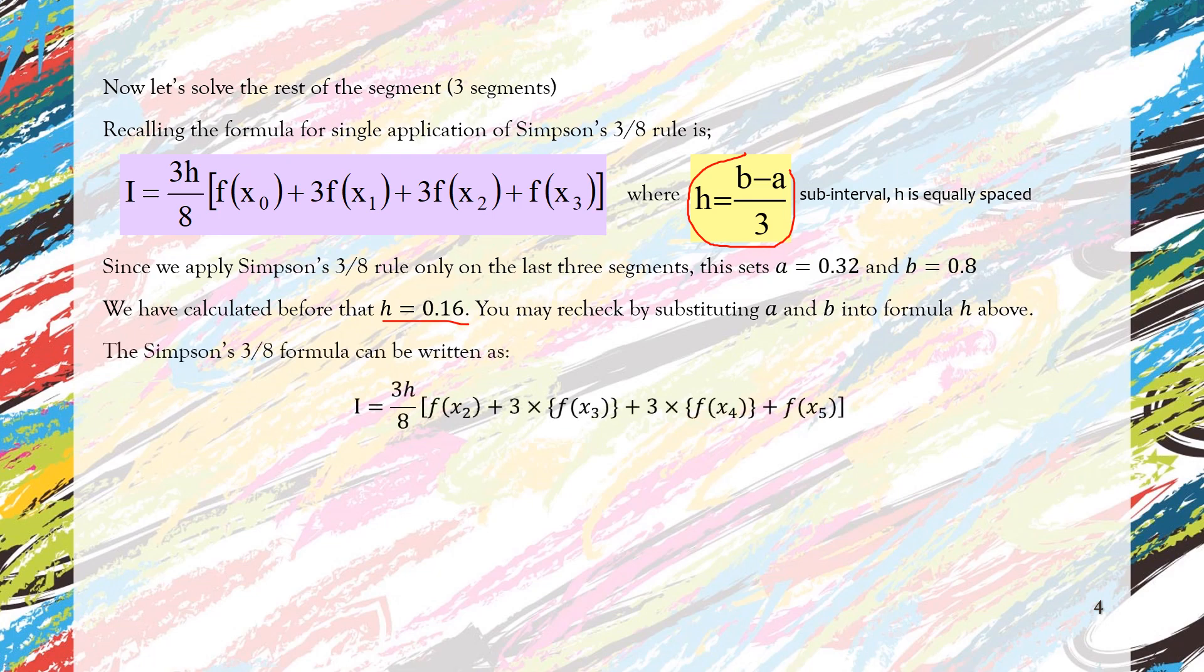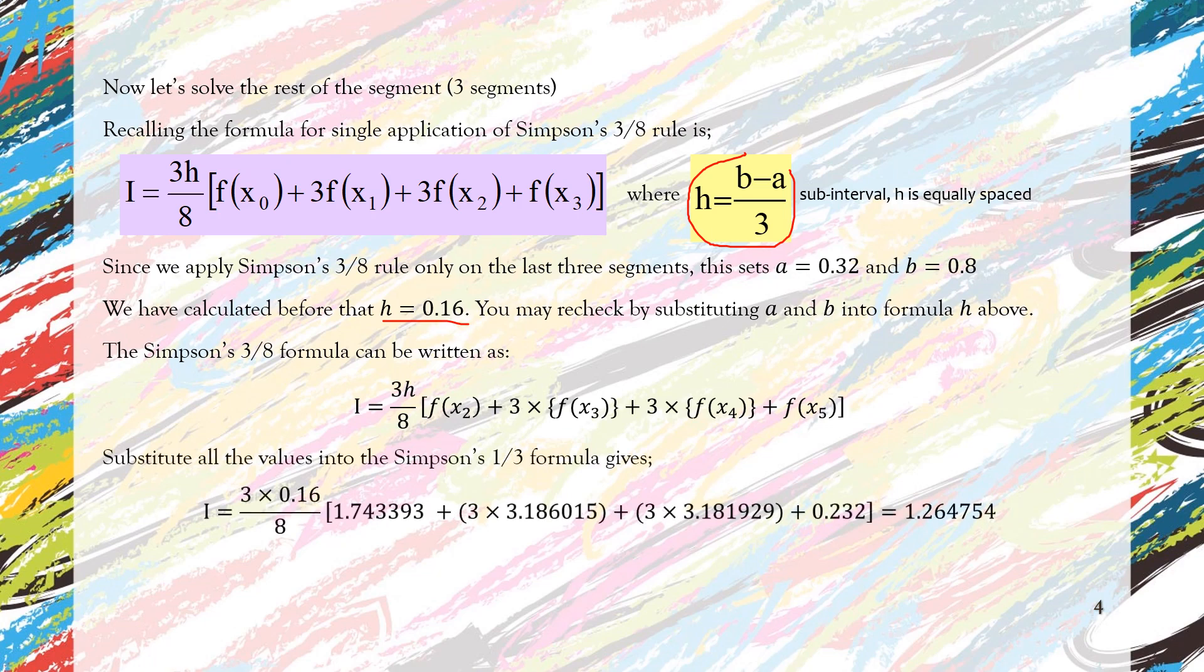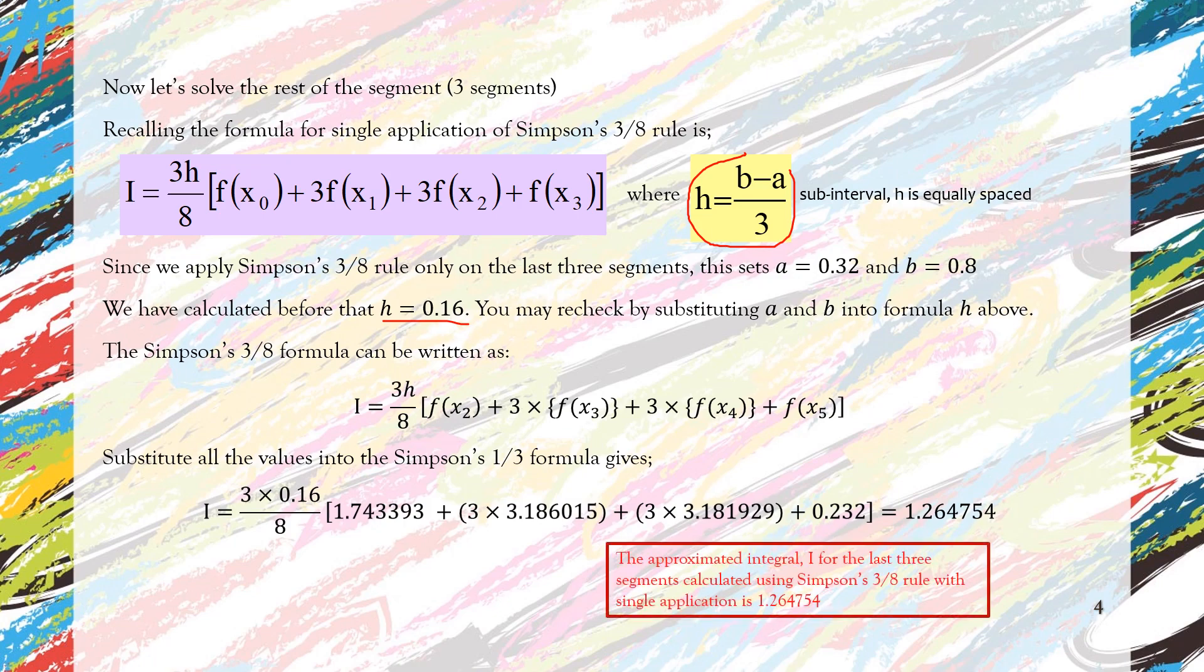And then you can rewrite the formula of 3/8 rule with the right f(x₂), f(x₃), and so forth. And then you substitute the value that you have evaluated before, make sure you substitute the right one, and you get the answer of the integral for the last three segments, which is 1.264754. This one is obtained by solving it using the Simpson's 3/8 rule.